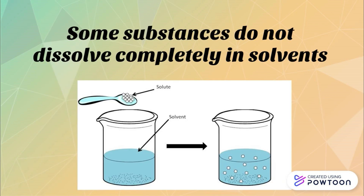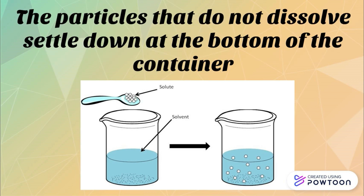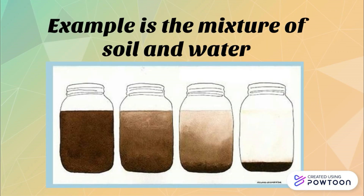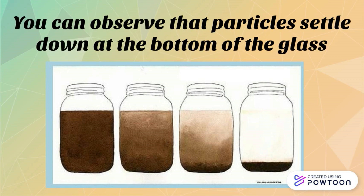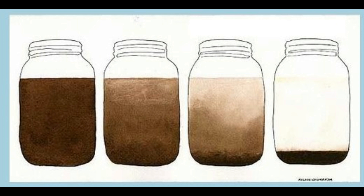Some substances do not dissolve completely in solvents. The particles that do not dissolve settle down at the bottom of the container. For example, in a mixture of soil and water, you can observe that particles settle down at the bottom of the glass. The soil does not fully dissolve in water.